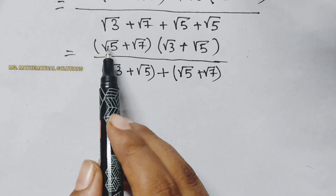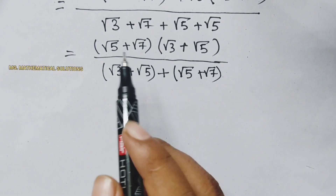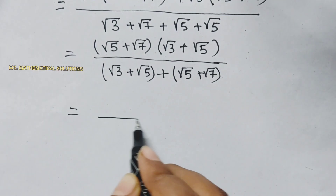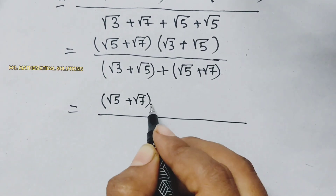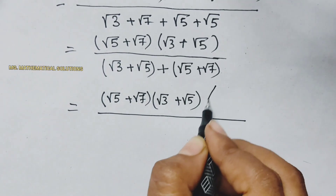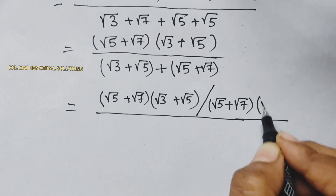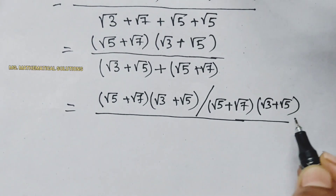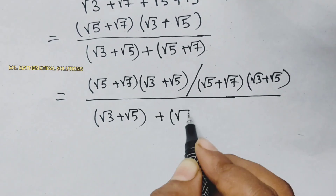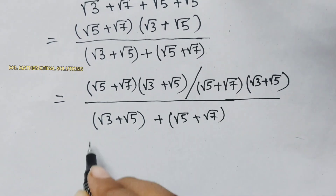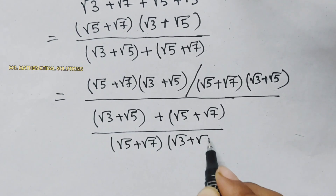We divide the numerator and denominator by the common factor root 5 plus root 7, times root 3 plus root 5. So we get the quantity root 5 plus root 7 times root 3 plus root 5, divided by root 5 plus root 7 times root 3 plus root 5, plus root 5 plus root 7 times root 5 plus root 7, divided by root 3 plus root 5.